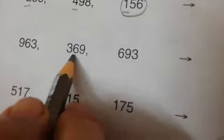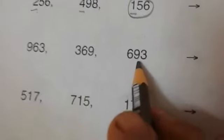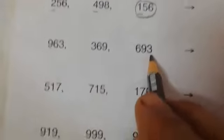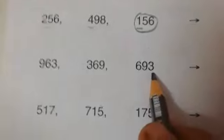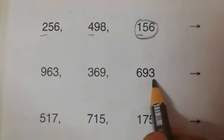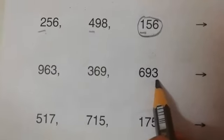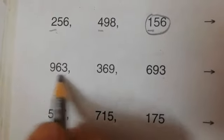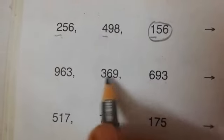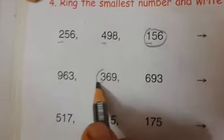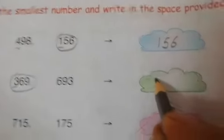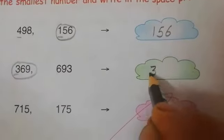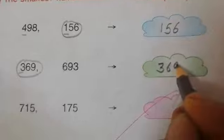Read it. 963, 369 and 693. Now which number is the smallest? Which hundred is smallest? 3. Then first we will ring and after that we will write 369.